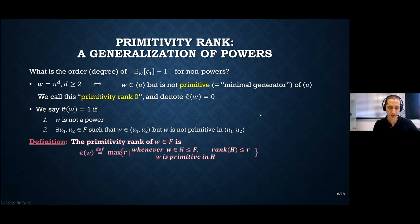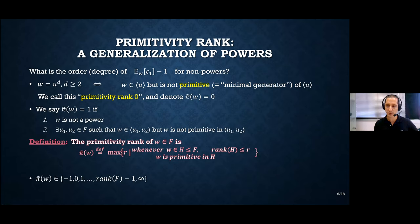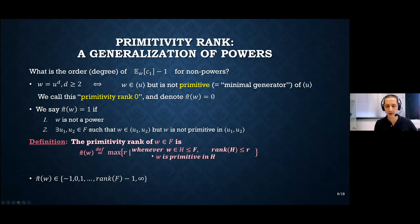The possible values of primitivity rank are: minus one for the trivial element; zero for proper powers; then all integer values up to rank(F) minus one; and infinity for primitive elements — those that belong to some minimal generating set of the ambient free group. A random word of large length typically has the highest finite primitivity rank, which is rank(F) minus one.